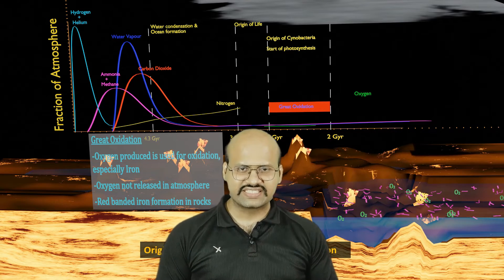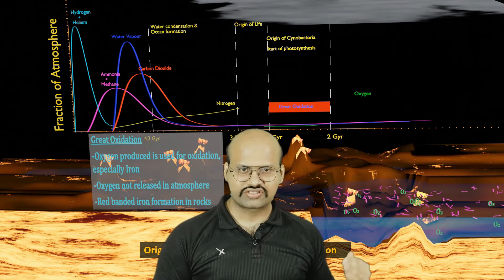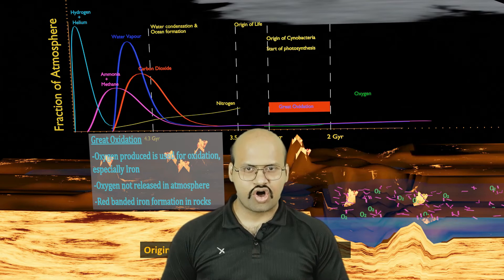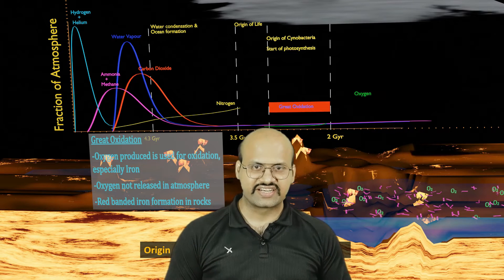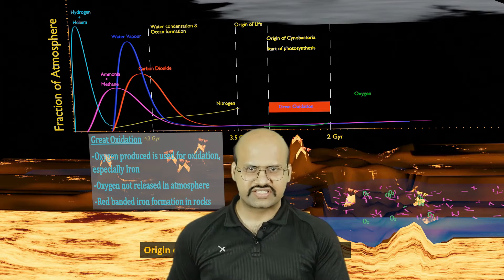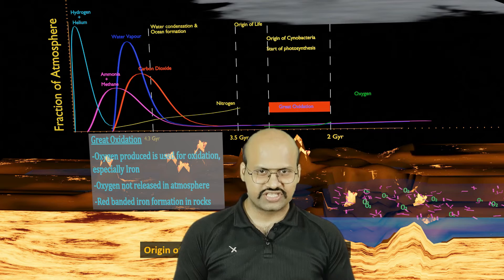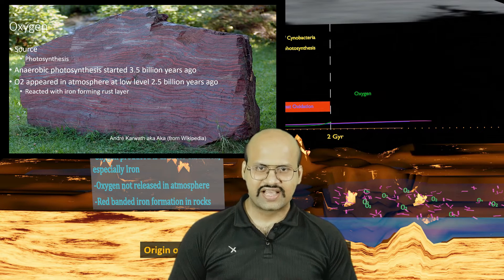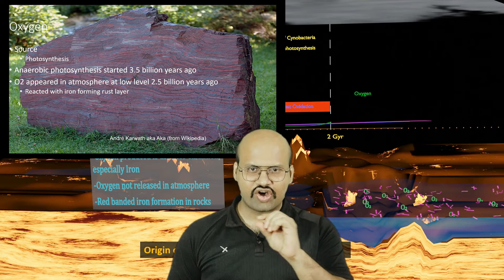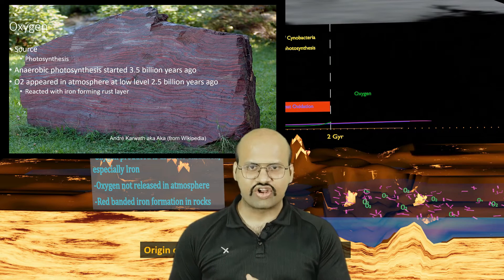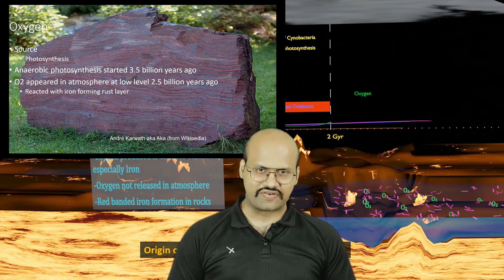The reason is that the oxygen which was released got oxidized — it reacted with several other elements. If you look at rocks of this age, you will find red oxidation layers, mainly iron oxide layers, in them.